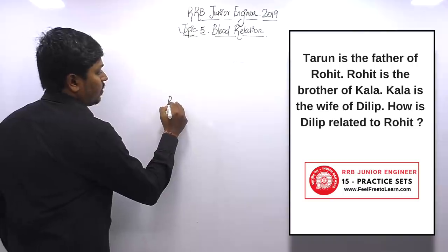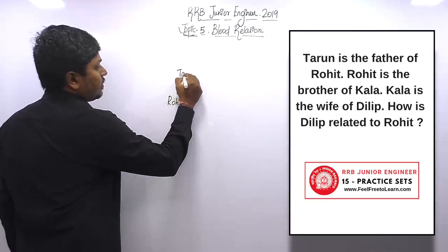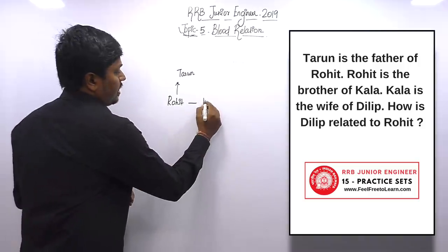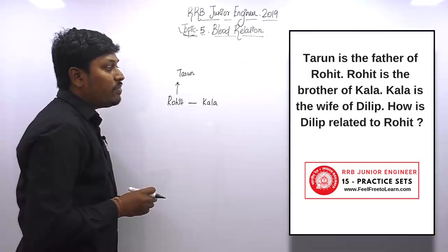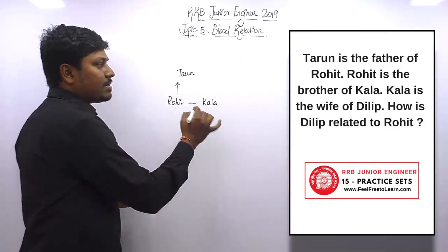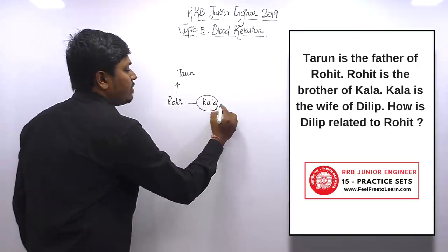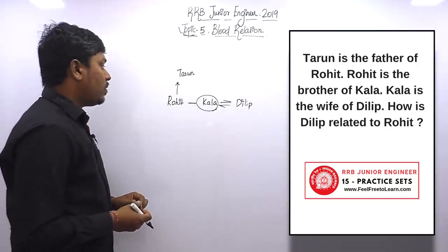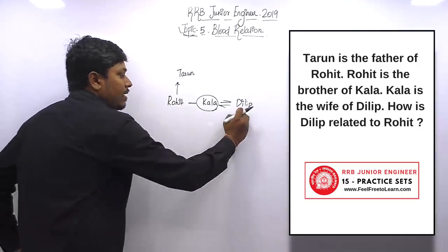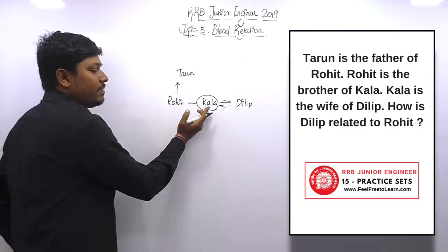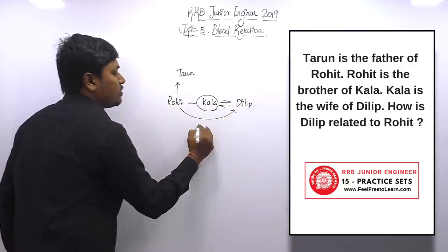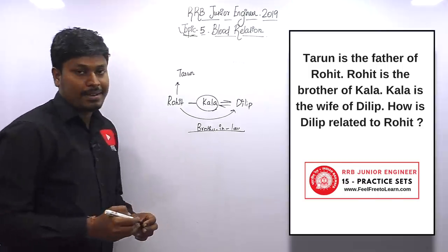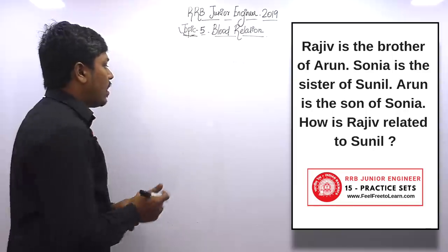Question number nine: Tarun is the father of Rogit. Rogit is the brother of Kala. Kala is the wife of Dilip, so Kala is female. The question is: how is Dilip related to Rogit? From Rogit, Kala is the sister. Kala's husband is Dilip, so Dilip is Rogit's sister's husband — which is called brother-in-law. The answer is brother-in-law.